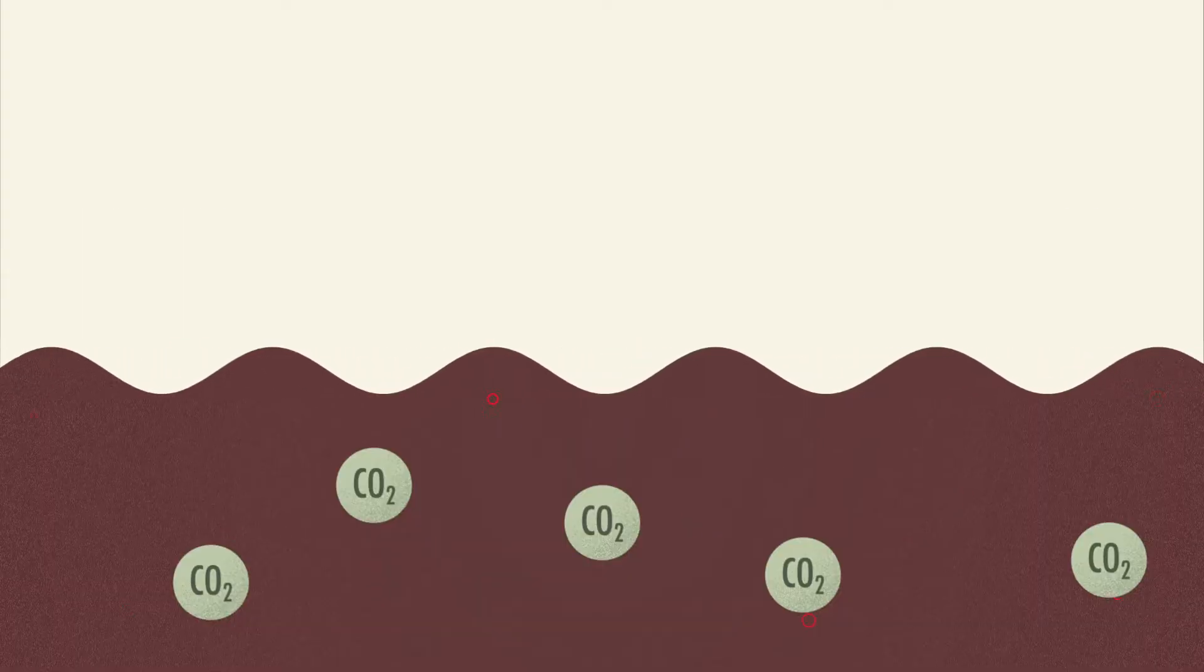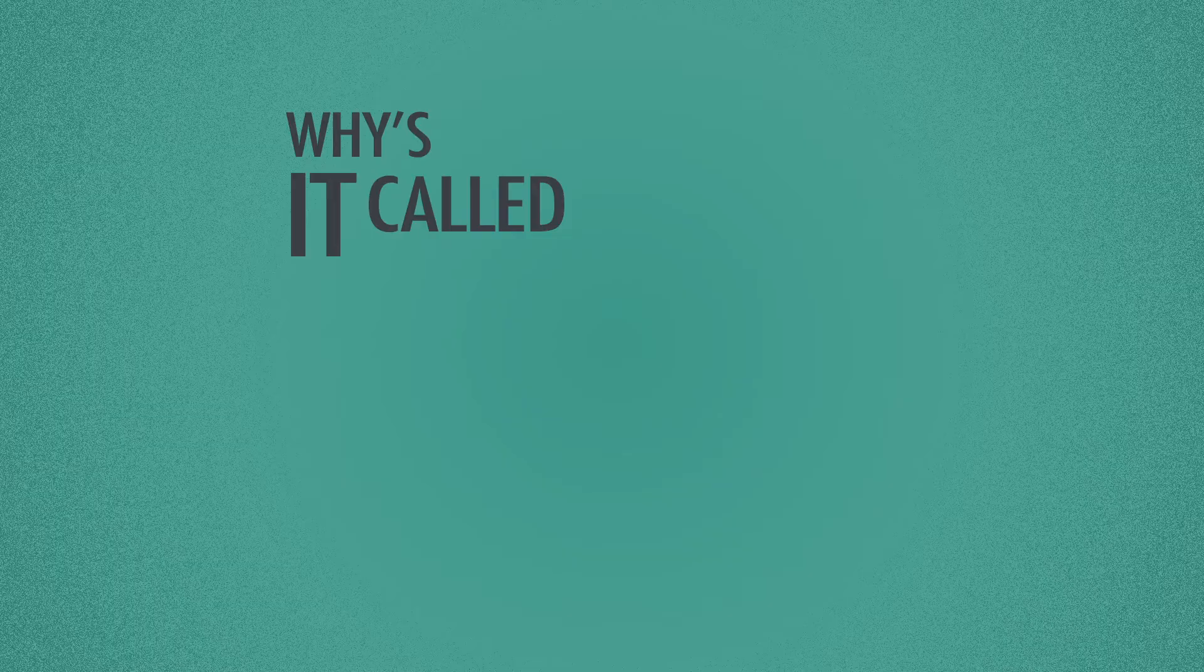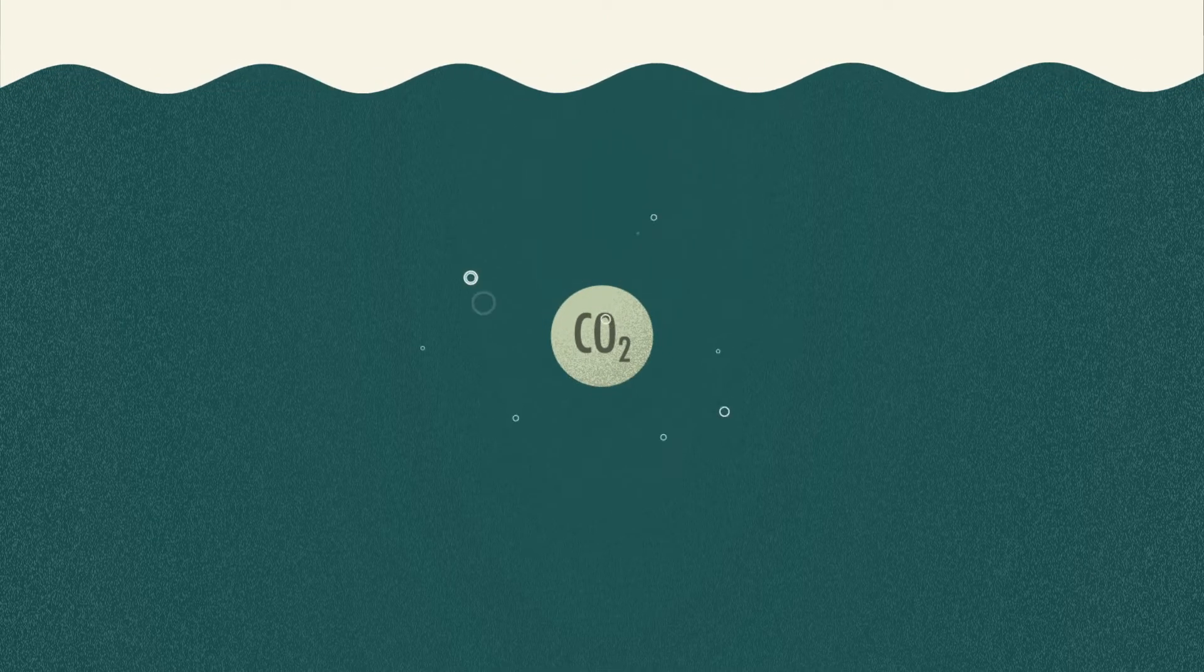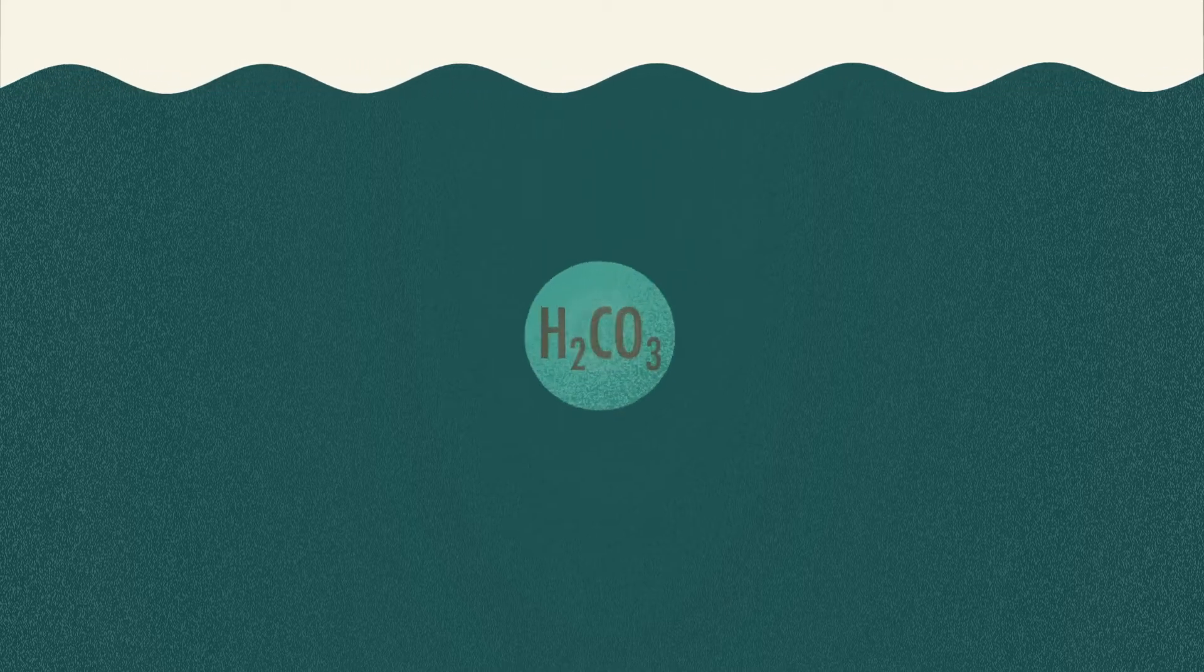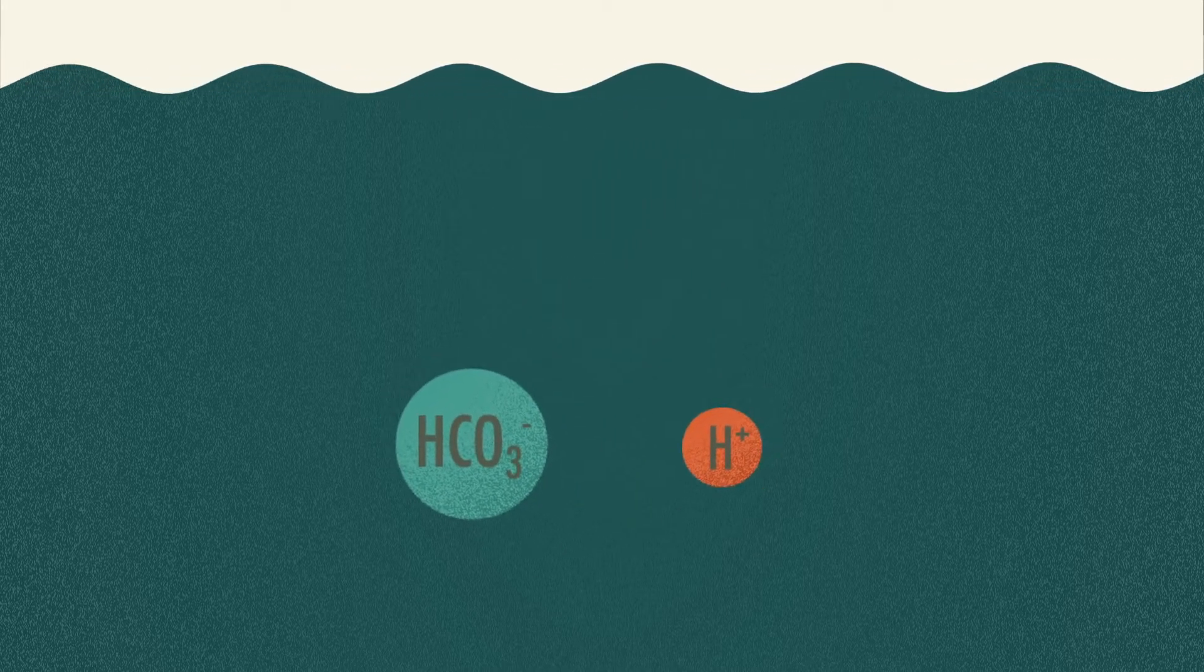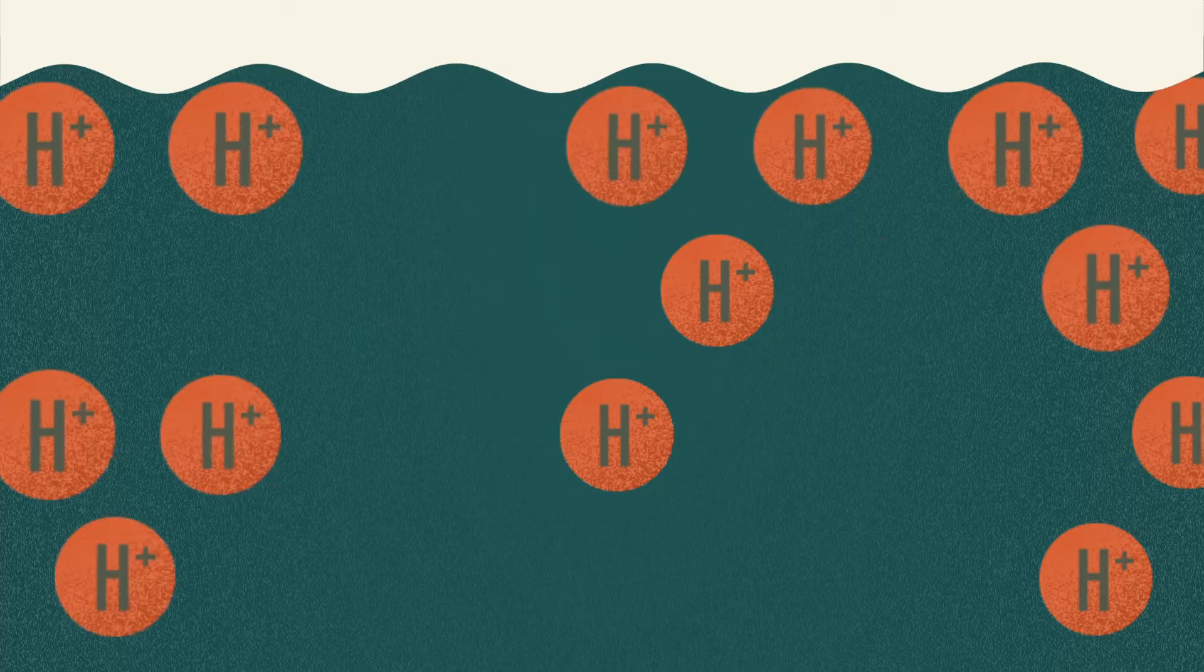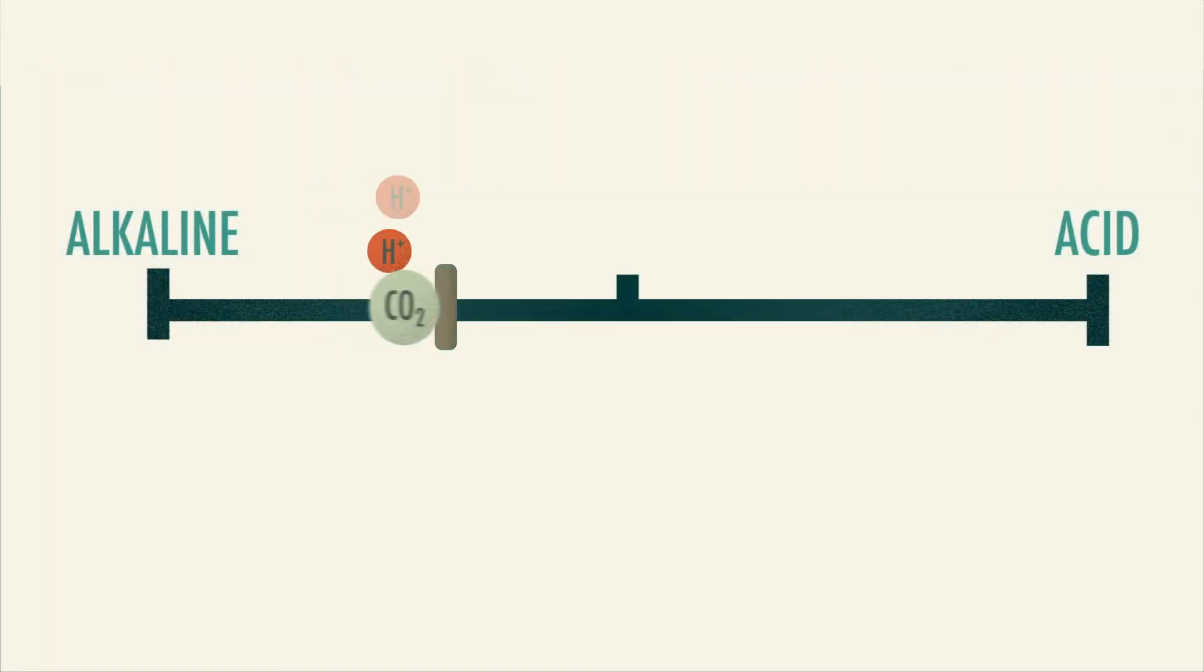So if it's not going to become an acid, why is it called acidification? When CO2 reacts with the water, it forms an unstable molecule called carbonic acid. This becomes stable by releasing a hydrogen ion and becoming bicarbonate. It is the production of these hydrogen ions into the water that reduces the pH of the water towards a more neutral position, closer to the acidic end of the pH scale.